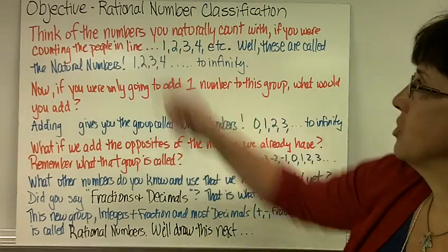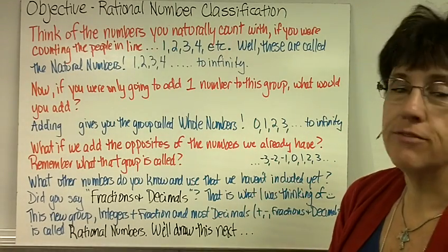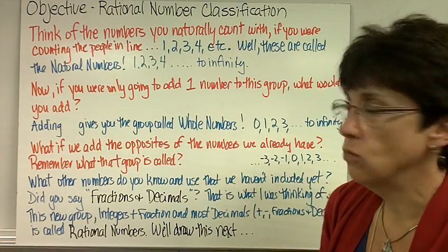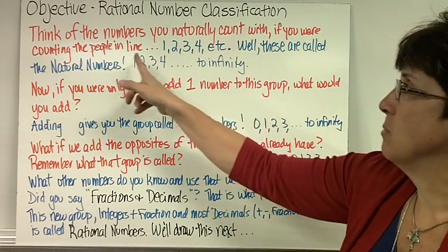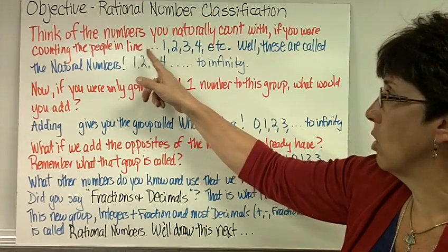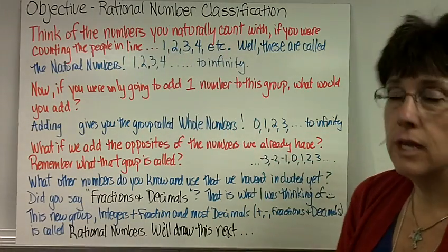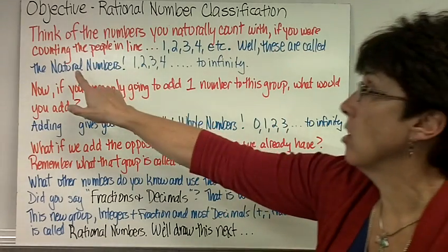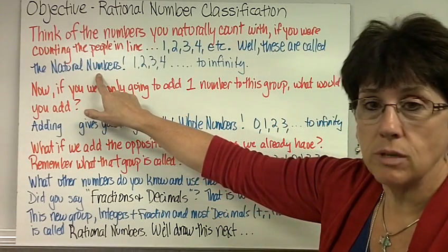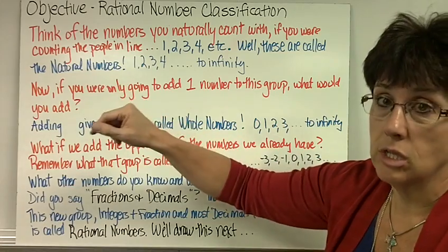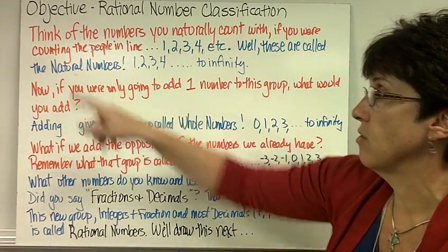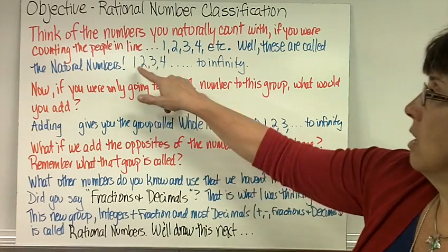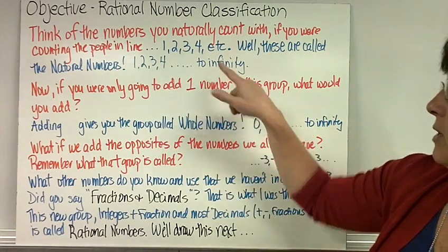Today's objective is Rational Number Classification. Think of the numbers that you naturally count with. If you were counting the people in line, you would go 1, 2, 3, 4, et cetera. That's what you naturally begin with, and these numbers are called the natural numbers. They're sometimes called counting numbers in younger grades, but think of them as natural numbers — how do you naturally start counting? 1, 2, 3, 4 to infinity.